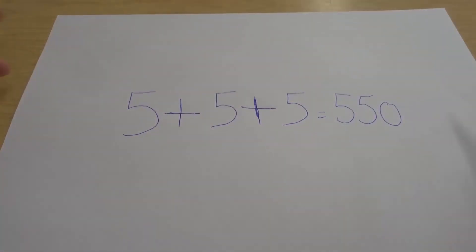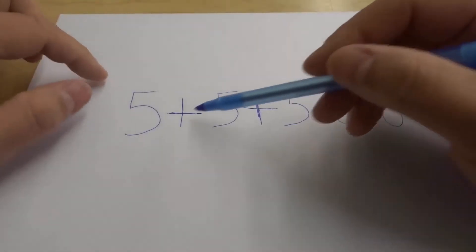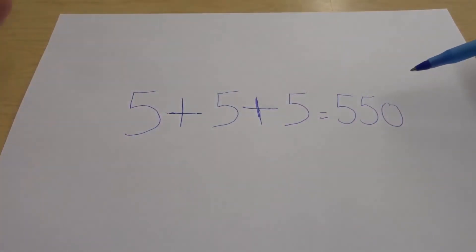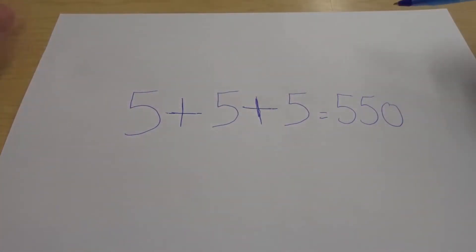So tell them they can only add one line on this entire equation to make it make sense. They're going to look around, they're going to try and figure everything out. They're probably not going to get it. All you have to do is go to this first plus sign right here.